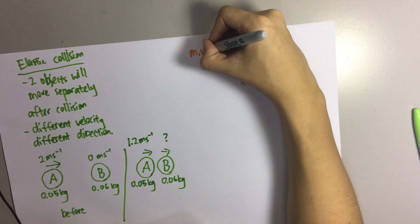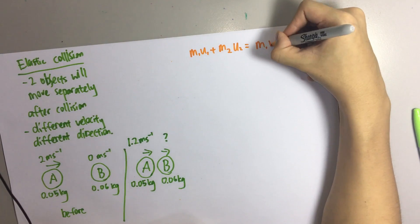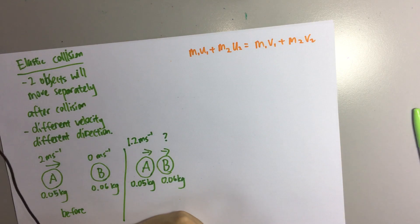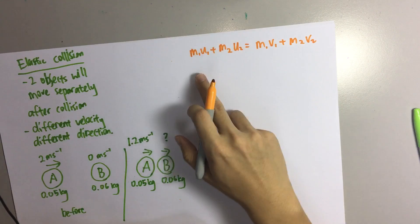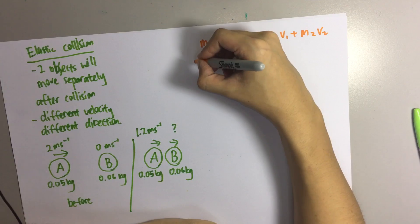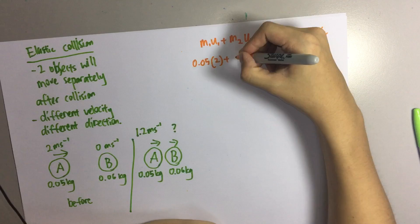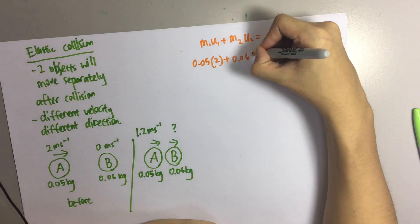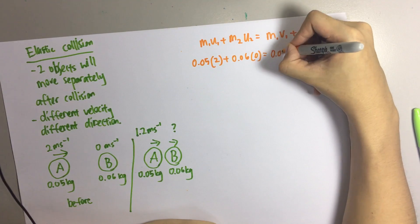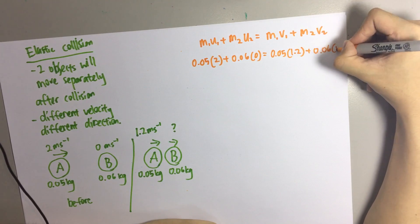We need to write down the formula — before and after. For before collision, setting object A as object 1: 0.05 × 2 + 0.06 × 0 equals to, after collision, 0.05 × 1.2 + 0.06 × V2.